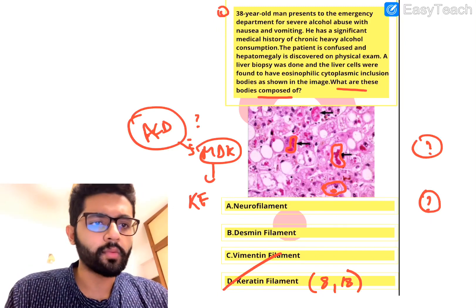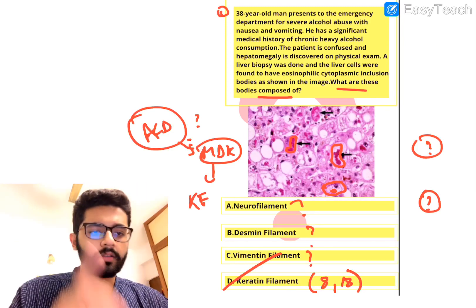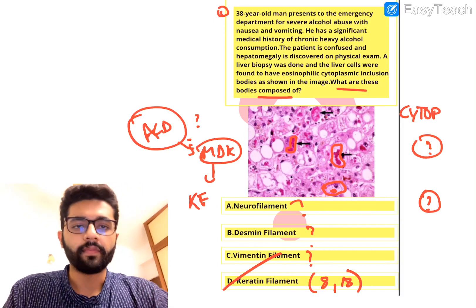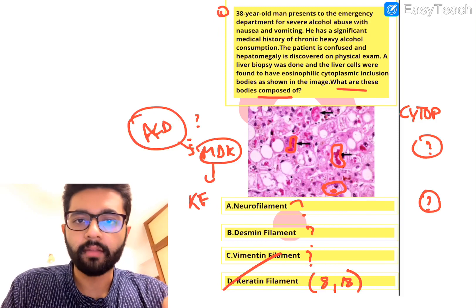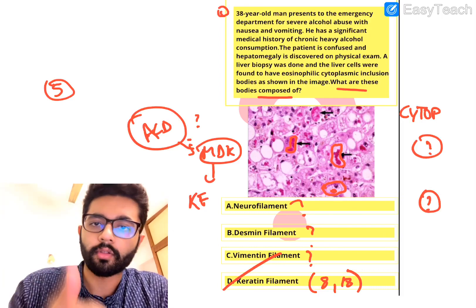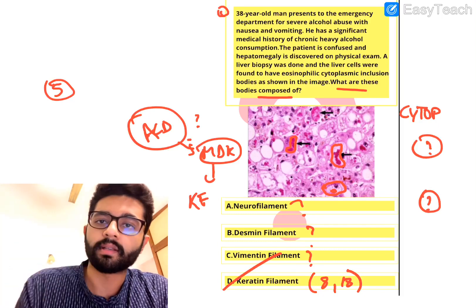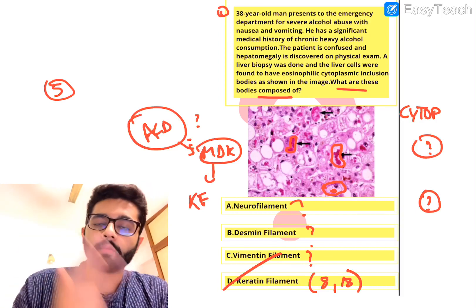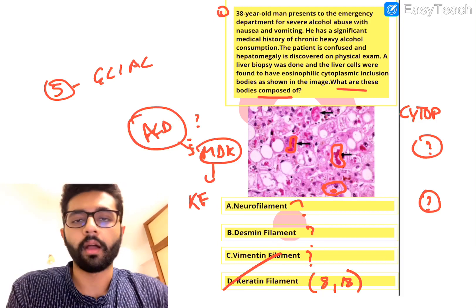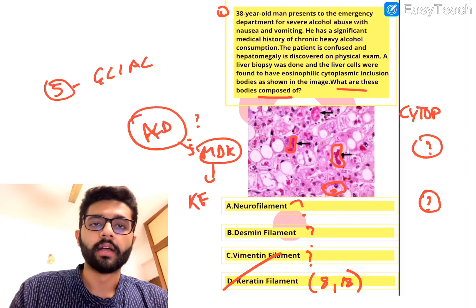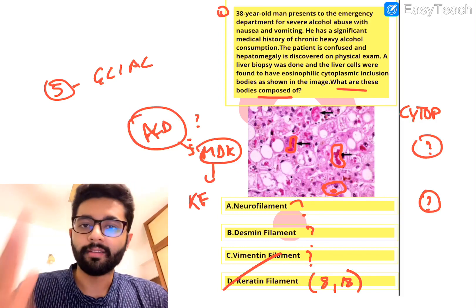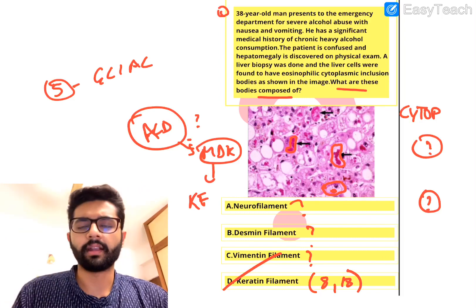Let's talk about these filaments and what we mean by neurofilament, desmin filament, and vimentin filament. These filaments are substances that help form the cytoplasmic structure of a cell — called intermediate filaments. There are five types: neurofilaments in neurons, desmin filaments in muscle cells, vimentin filaments in fibrous tissue, keratin filaments in epithelial tissue, and glial filaments in neuroglia. These have important diagnostic properties.